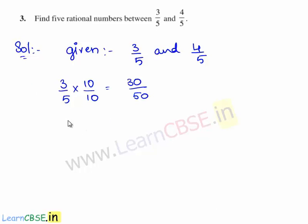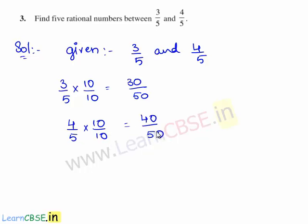We shall also consider 4 by 5 and multiply it with 10 on both the numerator and denominator. So we get 4 times 10 is 40 by 5 times 10 is 50. So here we have obtained the equivalent rational numbers for 3 by 5 and 4 by 5.